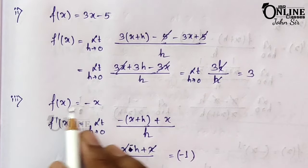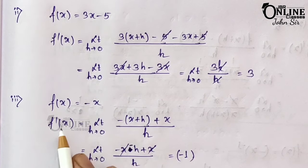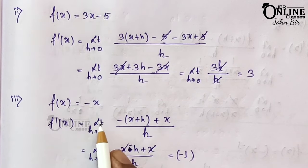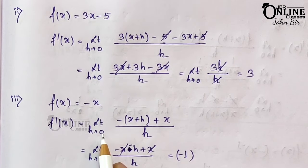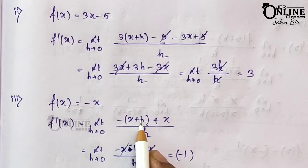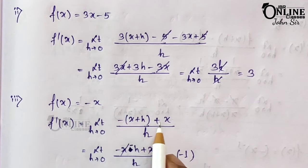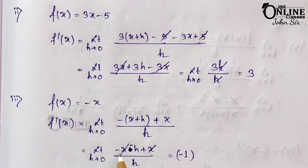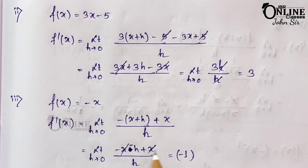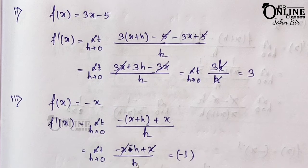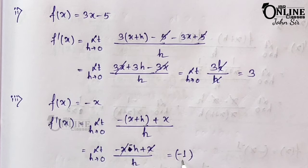Third: f(x) = -x. So f'(x) = limit h→0 of [-(x+h) - (-x)] / h = [-x - h + x] / h = -h/h = -1.